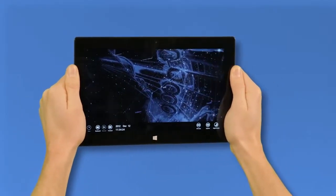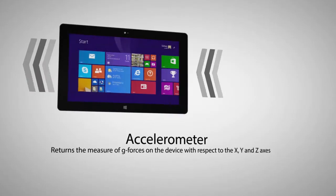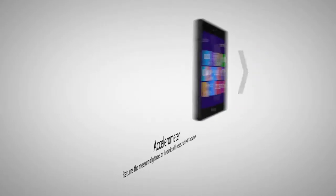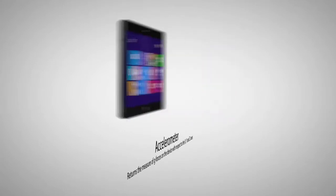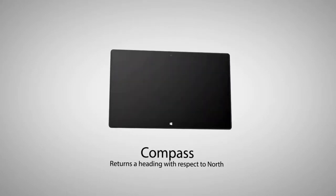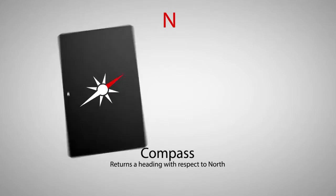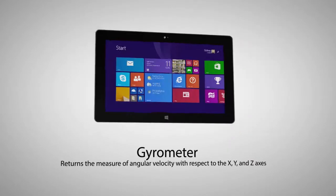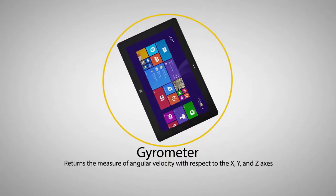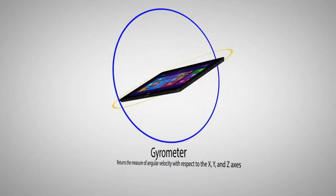Windows 8 supports a number of sensors. The accelerometer returns the measure of g-forces on the device with respect to the x, y, and z axes. The compass returns a heading with respect to north. The gyrometer returns the measure of angular velocity with respect to the x, y, and z axes.